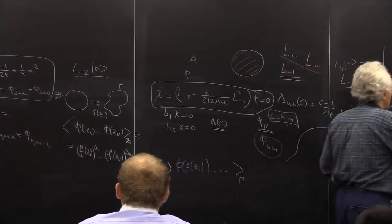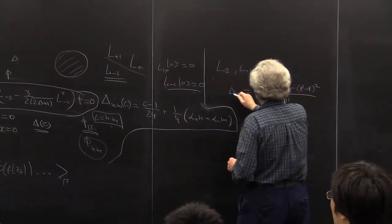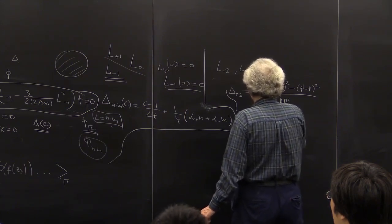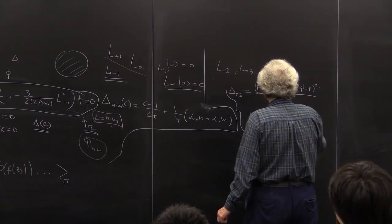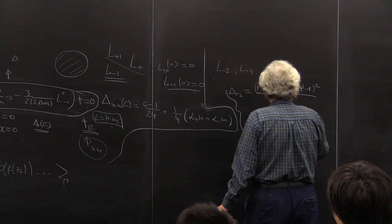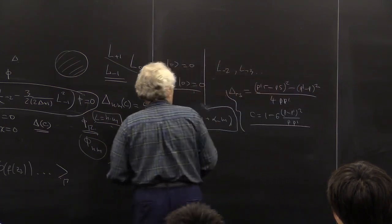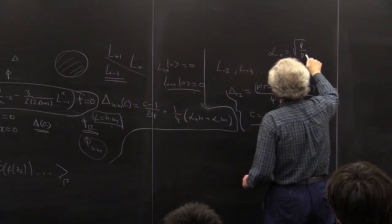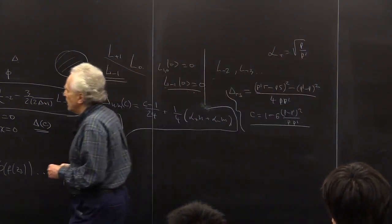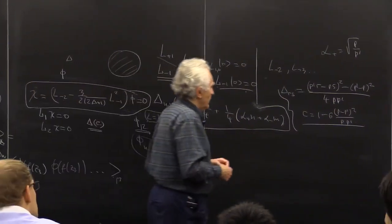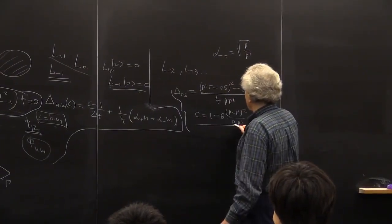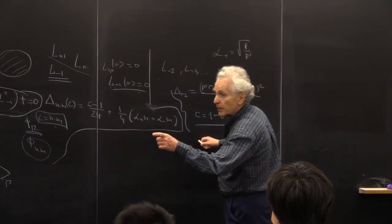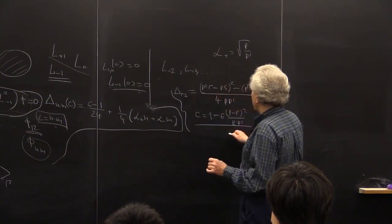We introduced another parametrization: delta_rs, the dimension of the operator degenerate at level rs, in a specific form. The central charge is 1 + 6(p - p')^2 / p p', and alpha_+ = sqrt(p/p'), alpha_- = sqrt(p'/p). The simplest way to check is with the Ising model: p=3, p'=4 gives c = 1/2. It's a good exercise to directly verify the formula for delta_nm(c) by solving the two equations at levels 1 and 2.